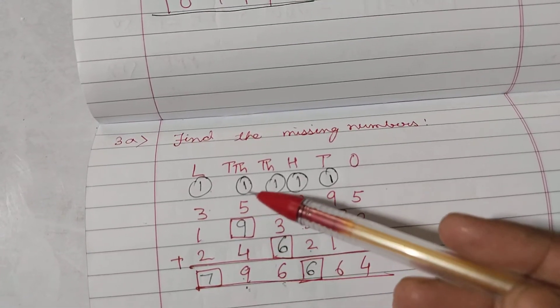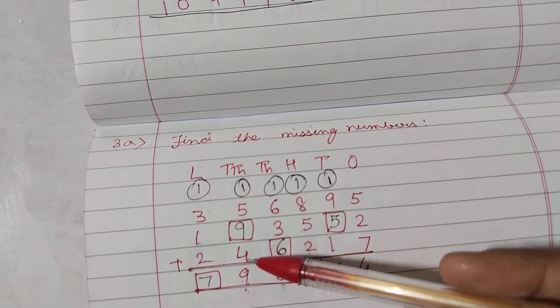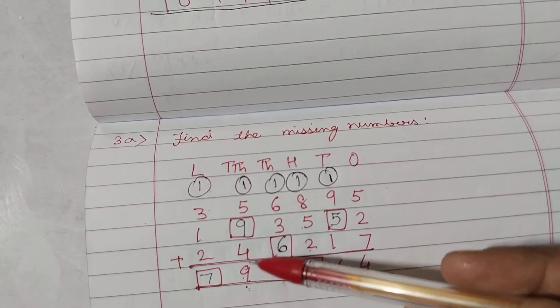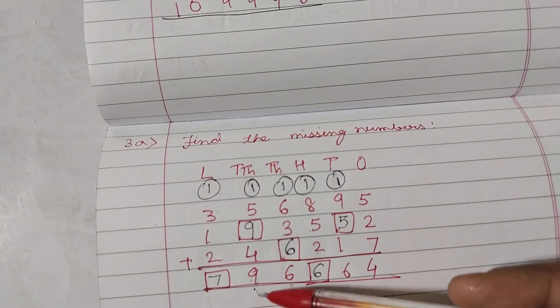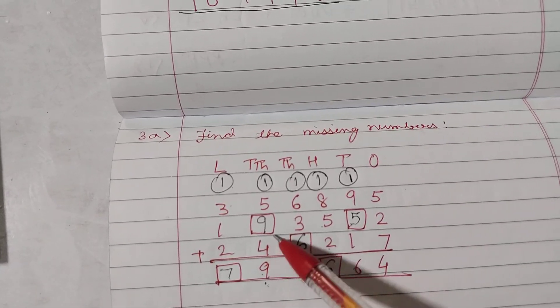Now, children, 16, 6 carry over 1. 1 plus 5, 6. 6 plus 4, 10. Now, what shall we add in 10 to get? Yes, not 9. 19. So, 10 plus 9 is 19. Write here 9.